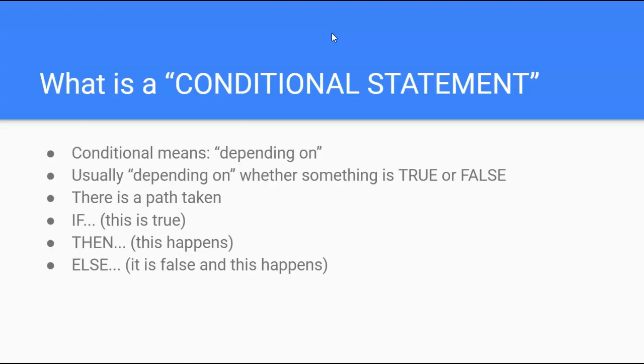Depending on whether something is true or false. For example, if I'm at school, I might get a drink at the drinking fountain. If I'm at home, I might get a drink out of the refrigerator. So depending on where I'm at determines where I get a drink.